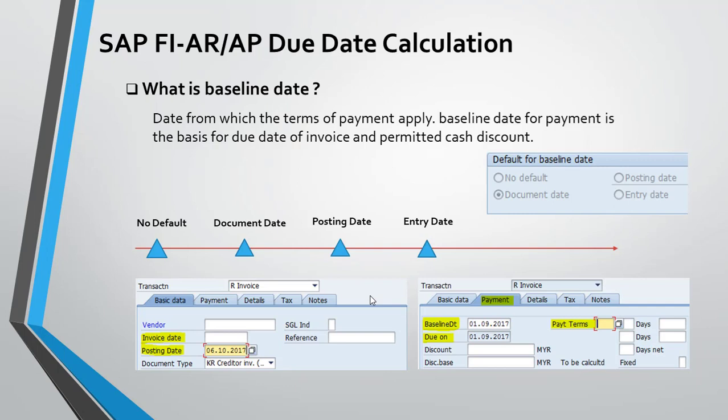The baseline date is the date from which the terms of payment will apply. When you are creating a payment term, you can default it as: no default, document date, posting date, or entry date. If you select no default, you must enter the baseline date manually when creating a document or invoice. If the default is document date, the system will automatically take the document date. If the default is posting date, the system will use the posting date as the baseline date. Entry date means the date when you are entering the document into the system.